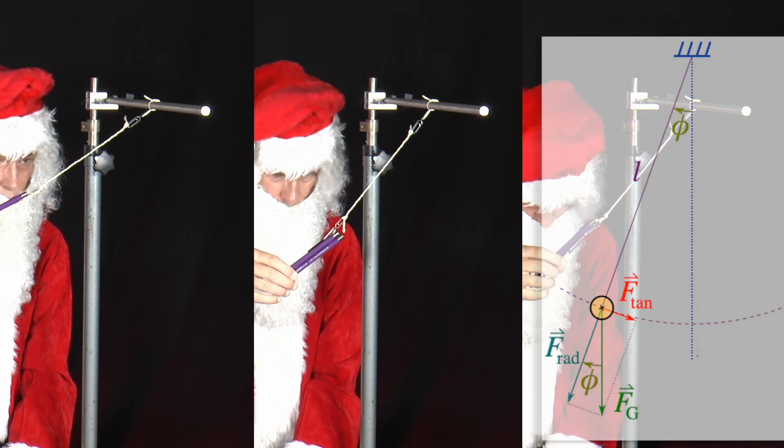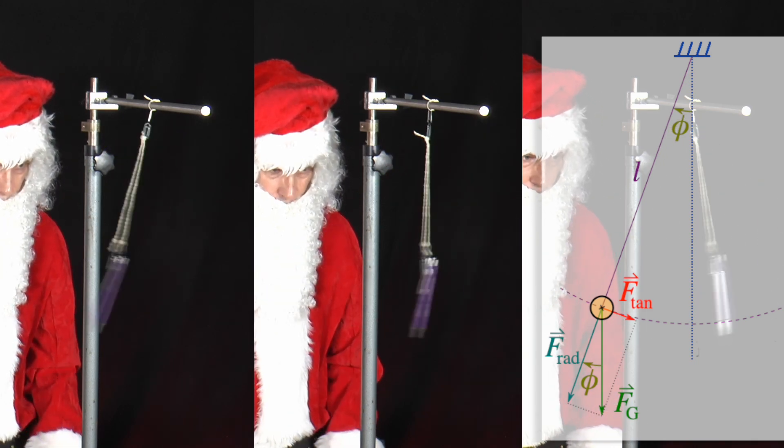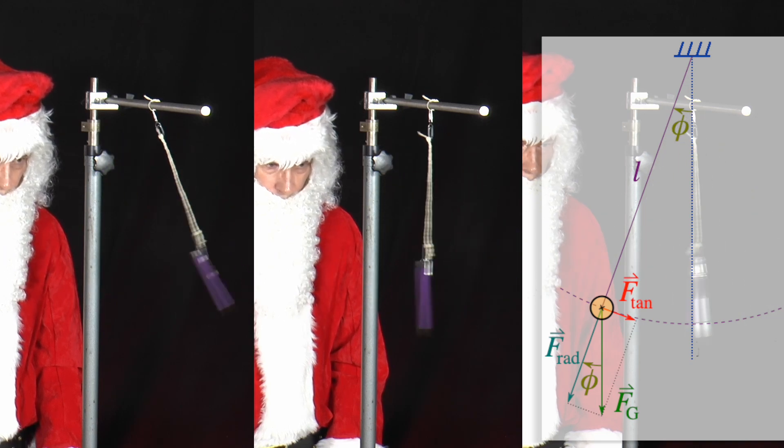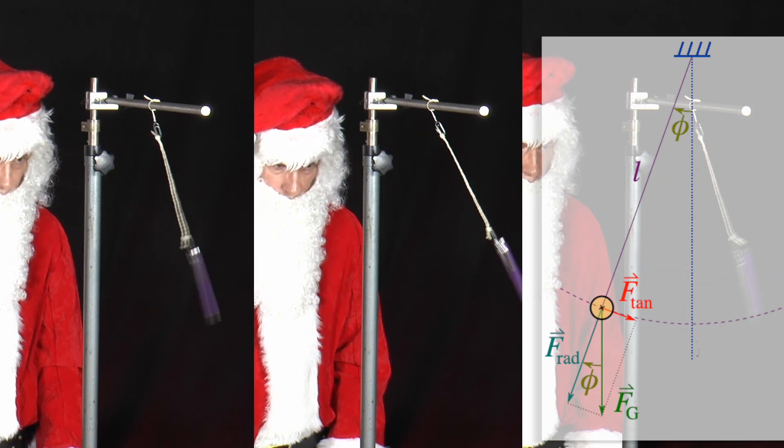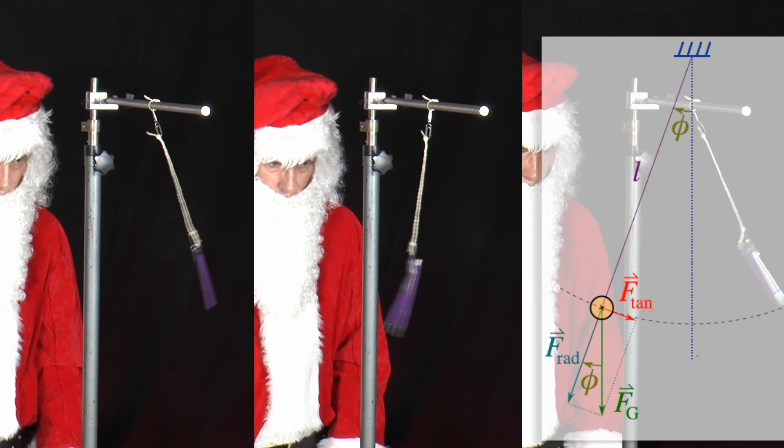If the pendulum is deflected by the angle phi, a tangential restoring force acts on the weight at the end of the pendulum. This depends on the pendulum mass, m, and the gravitational acceleration, g.